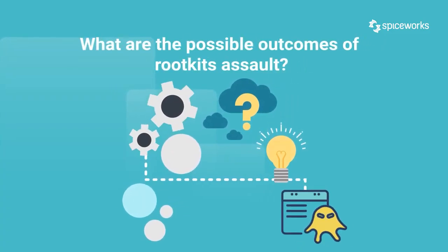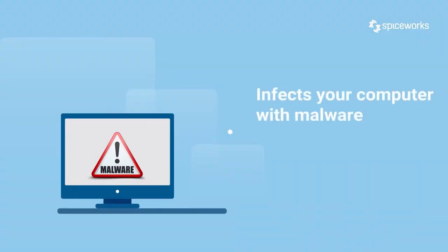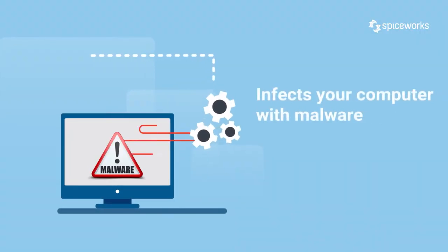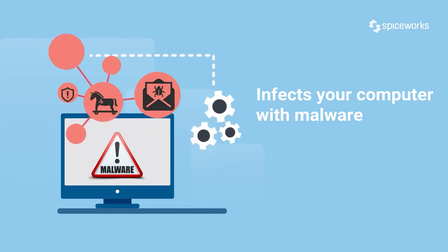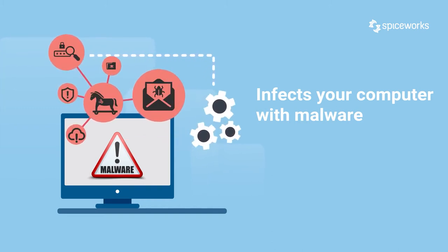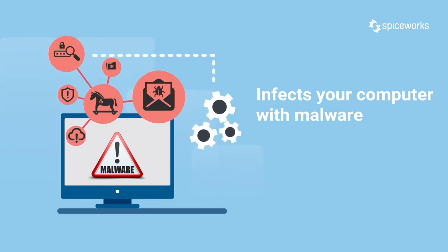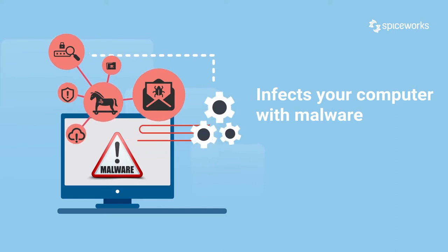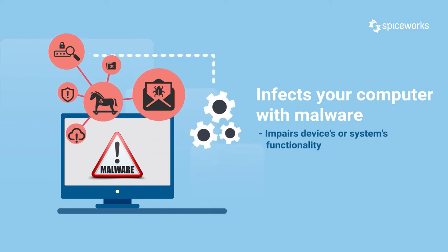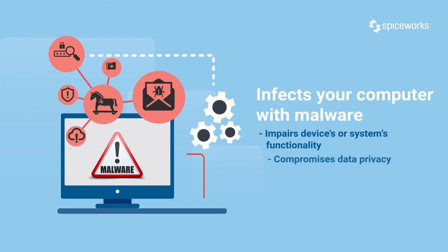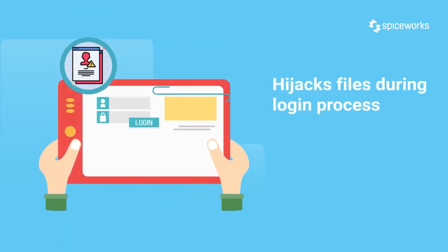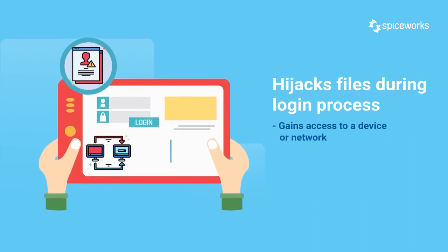What are the possible outcomes of a rootkit assault? First, it infects your computer with malware. A rootkit can infect a computer network or system with malicious software such as viruses, worms, adware, ransomware, trojans, spyware, and other harmful programs that can impair device or system functionality, compromising the privacy of its data.